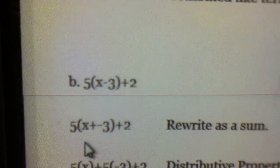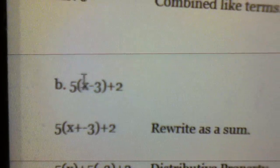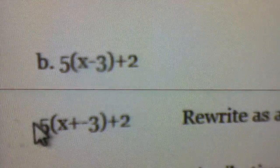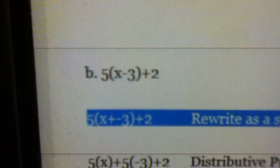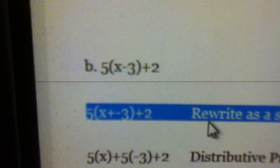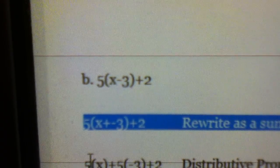Letter b, which is 5(x-3)+2. First, you're going to rewrite the sum as like terms, so that means turning the negative into a positive, or turning the subtraction into addition and adding a negative.